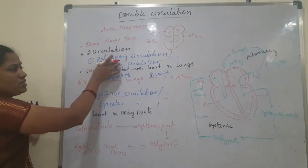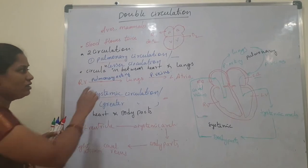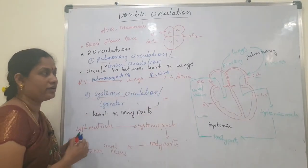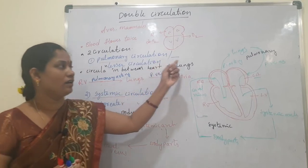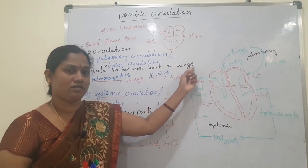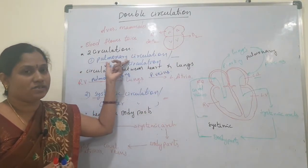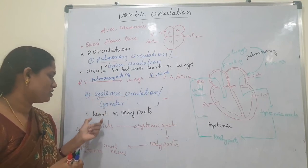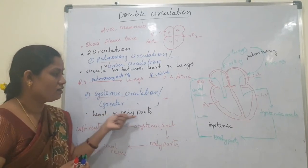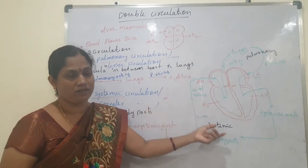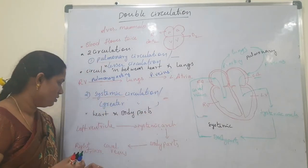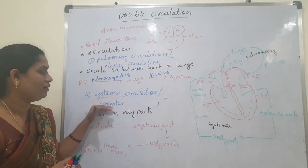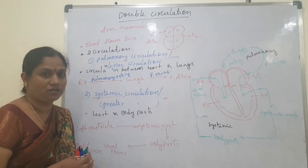Pulmonary circulation means circulation between the heart and lungs. Systemic circulation — or greater circulation — is the circulation that takes place between the heart and the rest of the body.